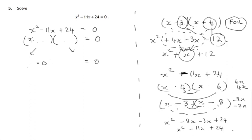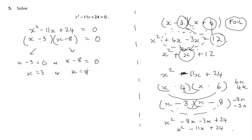Just by multiplying out we can see that works. So the first factor is x minus 3, the second factor is x minus 8. If these two factors multiply to give us 0, then either the first factor is 0 or the second factor is 0. If the first factor is 0, then x equals 3. If the second factor is 0, x equals 8. So there's our solution: x equals 3 or x equals 8.